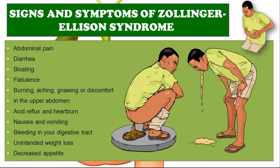The signs and symptoms of Zollinger-Ellison syndrome are centered around that massive acid production in the stomach. The patient may present with abdominal pain, diarrhea, bloating, flatulence, burning, aching, gnawing or discomfort in the upper abdomen, acid reflux and heartburn, nausea and vomiting, bleeding in the digestive tract, unintended weight loss, and a decreased appetite.